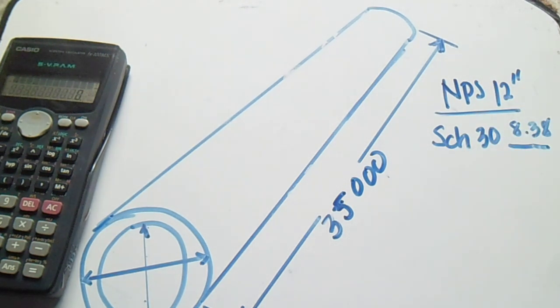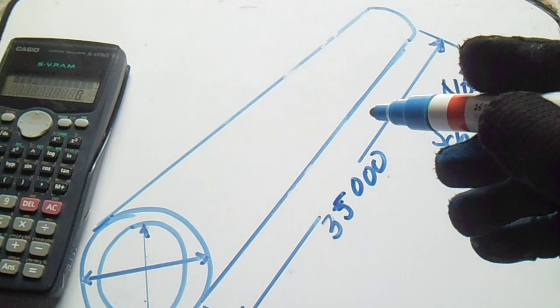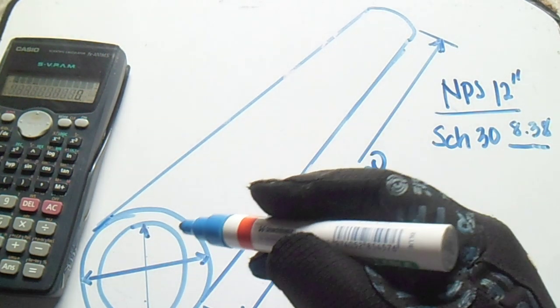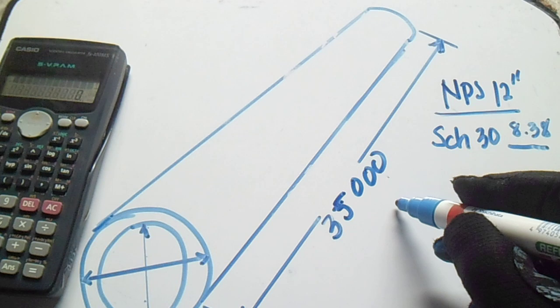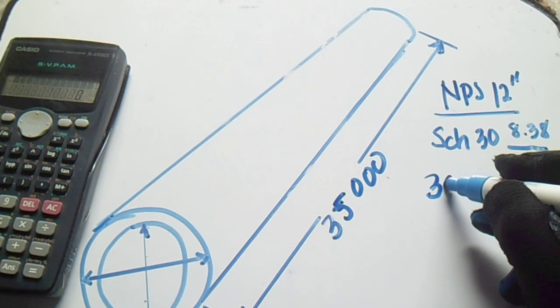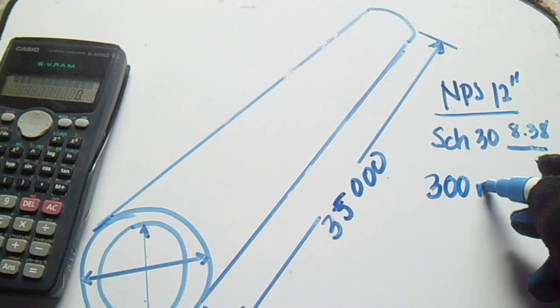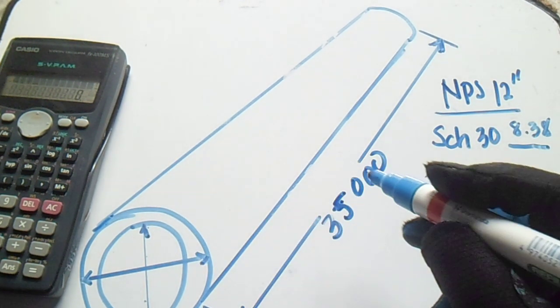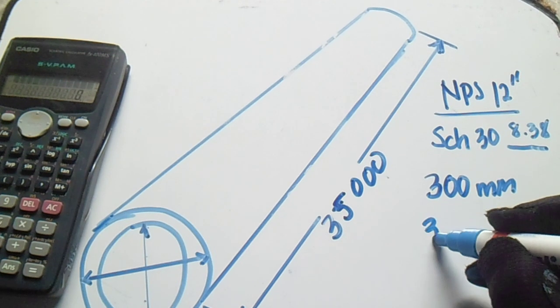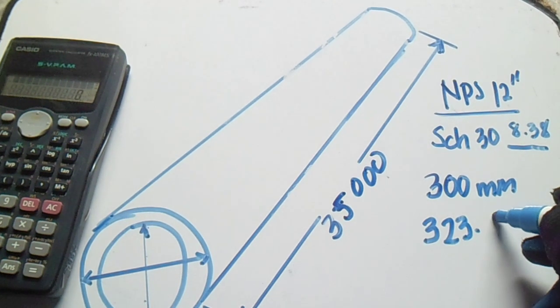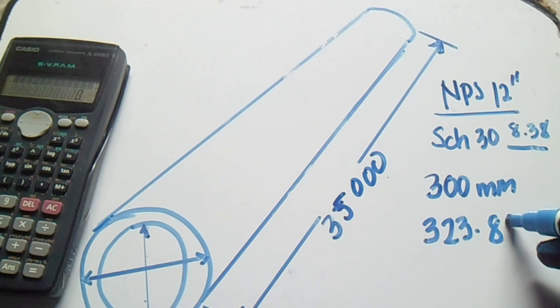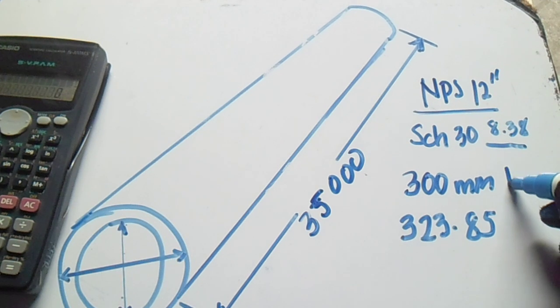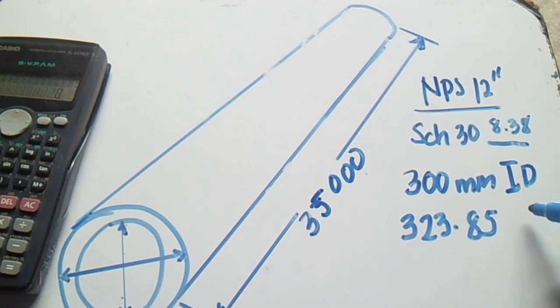The length of pipe we have is 35,000 millimeters. The inside diameter is 300 and the outside diameter of the 12 inches is 323.85.